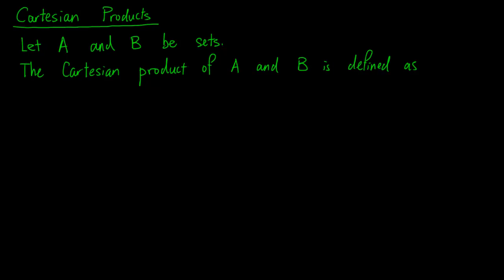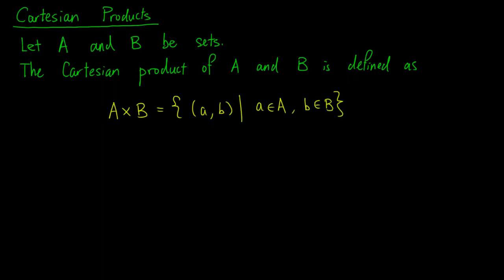First, we need to introduce the concept of Cartesian products. Let A and B be sets. The Cartesian product of A and B, written as A cross B, is the set of elements of the form (a, b), where a is an element of the set A, and b is an element of the set B.